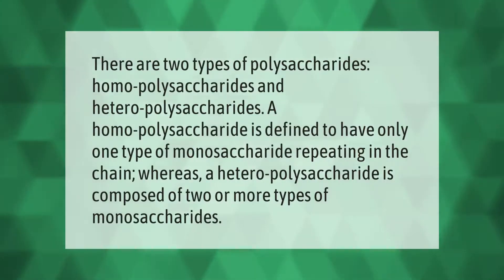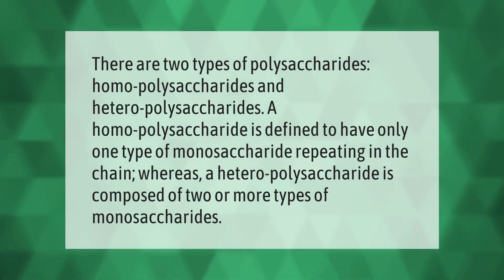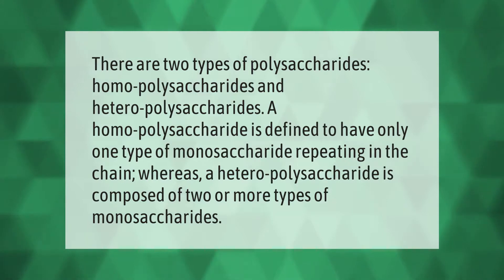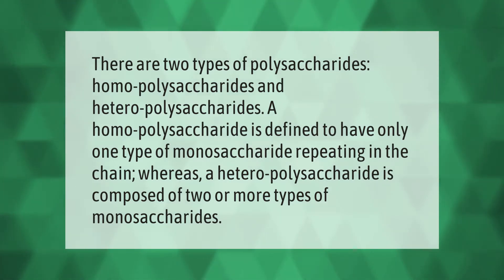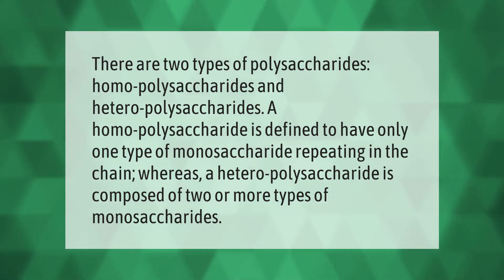There are two types of polysaccharides: homopolysaccharides and heteropolysaccharides. A homopolysaccharide is defined to have only one type of monosaccharide repeating in the chain, whereas a heteropolysaccharide is composed of two or more types of monosaccharides.